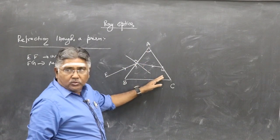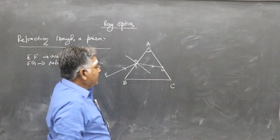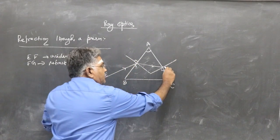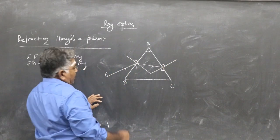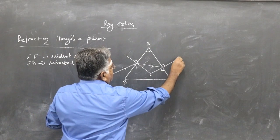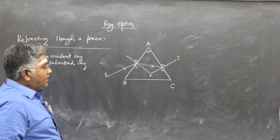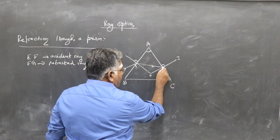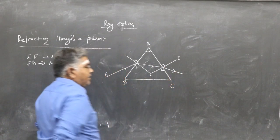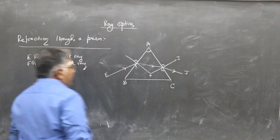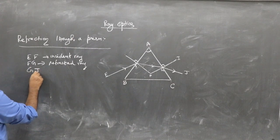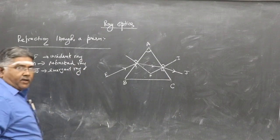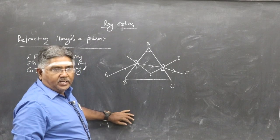When the light hits the second surface AC, it goes from denser to rarer medium, so it has to deviate away from the normal. We draw another normal HI at point G on surface AC. The ray emerges and GK is called the emergent ray.